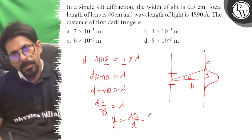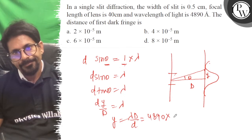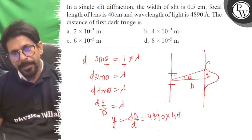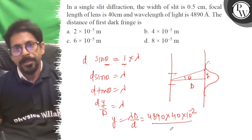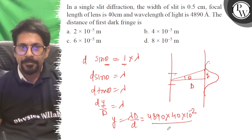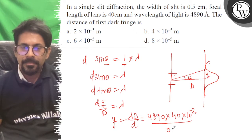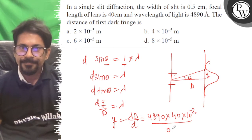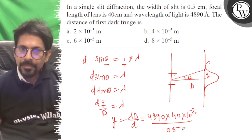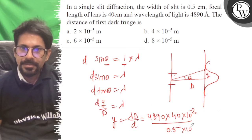So, y is equal to lambda times D over d. And lambda is equal to 4890, capital D is equal to d, so focal length is equal to 40, which is 10 to the power minus 2, over small d.